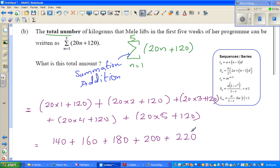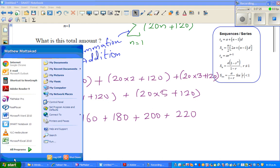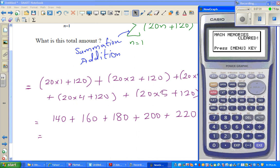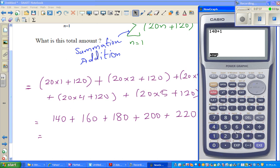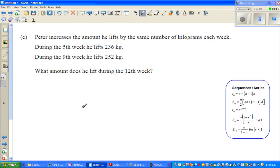What is this formula telling me? Mele starts—in the first week she started 140 kg, and in the fifth week she lifted 220 kg. Basically they're asking you to add it. Let me use my calculator. So 140 plus 160 plus 180 plus 200 plus 220 equals 900. So in five weeks she lifted 900 kg.